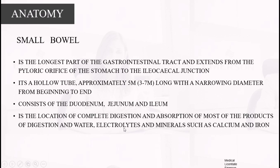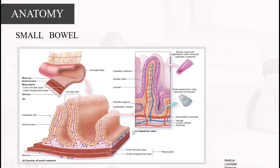Electrolytes and minerals such as calcium and iron are also absorbed from the small bowel. The structural layers include the mucosa, submucosa, muscularis (inner and outer), and the serosa.